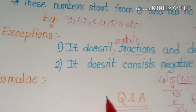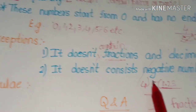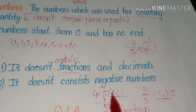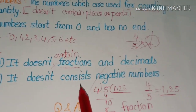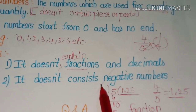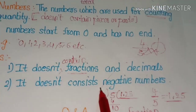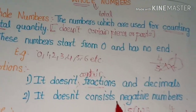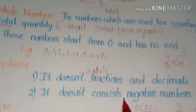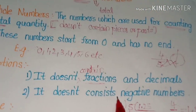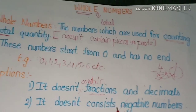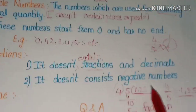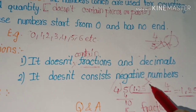The next exception is that whole numbers don't consist of negative numbers. When counting chocolates we start from 1, 2, 3, 4, or say 0 if we have none. We would never say 'I have minus 1 chocolate' or 'minus 2 chocolates.' So whole numbers do not include negative numbers.